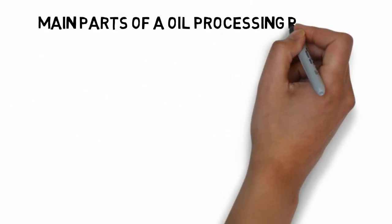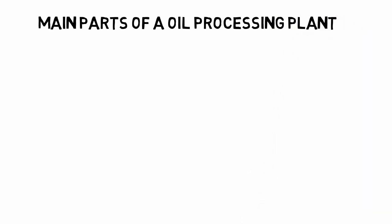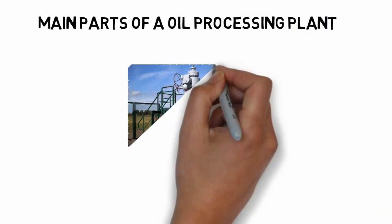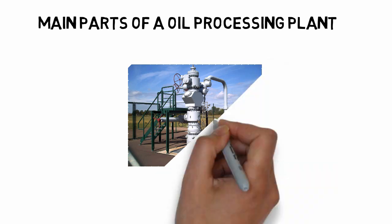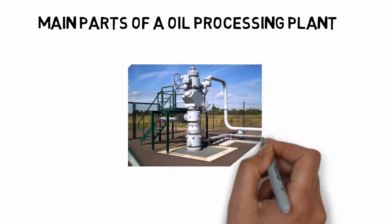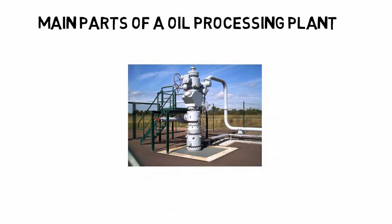The oil processing plant consists of different systems which all work together in order to process the oil extracted from the reservoir and produce an oil within the acceptable limits. These systems are wellheads, reception facilities, separation system, storage system and export system.